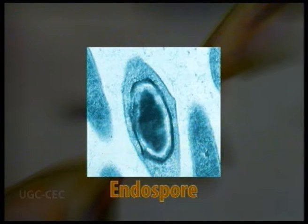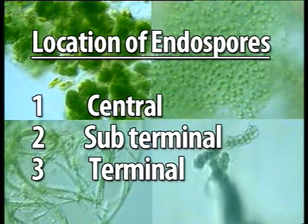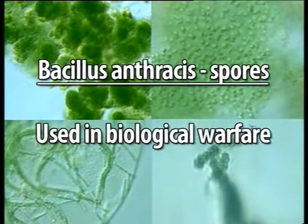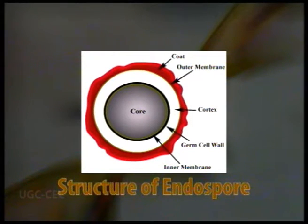Endospores are specific kinds of spores formed under very harsh environmental conditions and are highly resistant to heat, irradiation, cold, and other stresses — even boiling for one hour may not destroy them in most cases. It takes bacteria both time and energy to make these spores. Their location within the bacterium — central, subterminal, or terminal — is important for classification. Endospores have specific uses: for example, Bacillus stearothermophilus spores are used for quality control of heat sterilization equipment, and Bacillus anthracis spores are used in biological warfare.